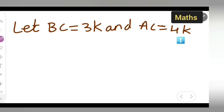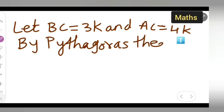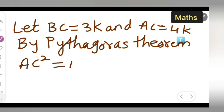Now I will be applying Pythagoras theorem. By Pythagoras theorem for triangle ABC: AC squared is equal to AB squared plus BC squared.